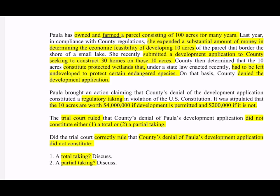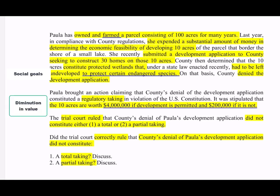So it has not lost all of its economic value, which means we need to analyze decreased economic value and look for facts that go to those three factors. The first one is social goals. Where do I find facts that go to the social goals in that regulation? In the first paragraph, this regulation is to protect certain endangered species — those are the social goals, and pretty important ones. The second factor is diminution in value: how much will it decrease the value of the property for her to be denied this permit to develop? The 10 acres are worth $4 million if development is permitted and $200,000 if it is not — those are the facts that go to diminution in value.